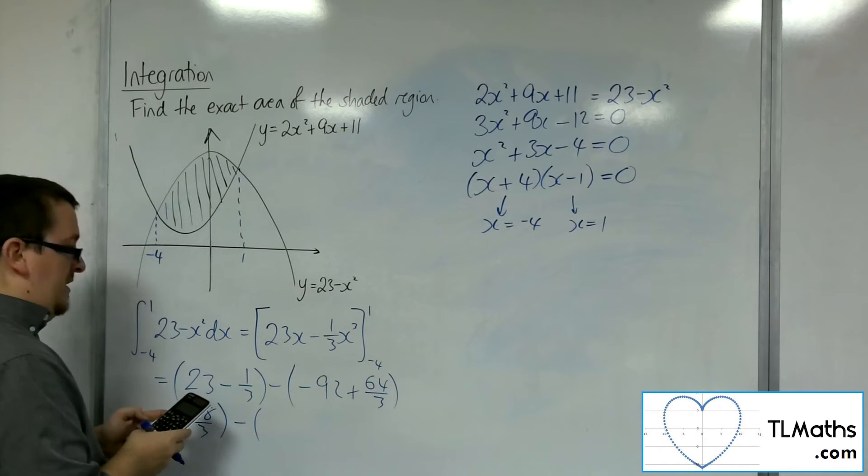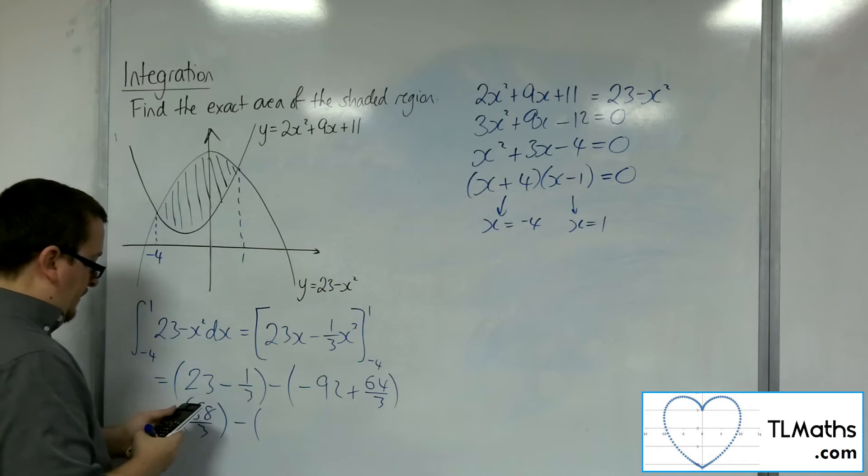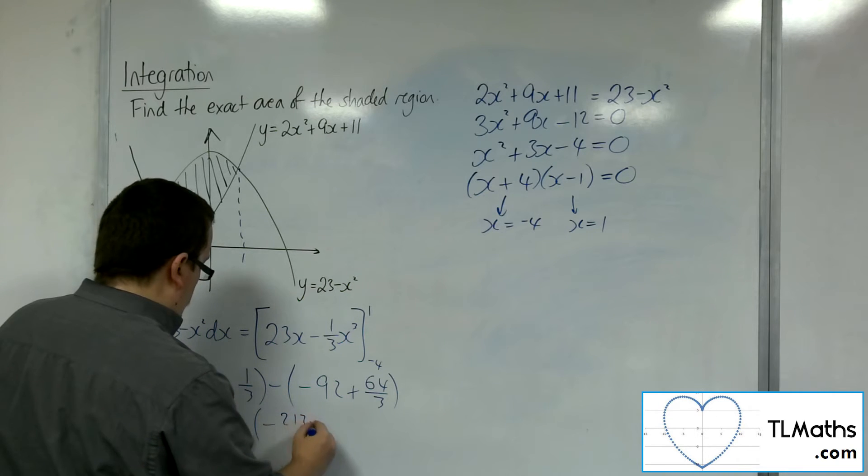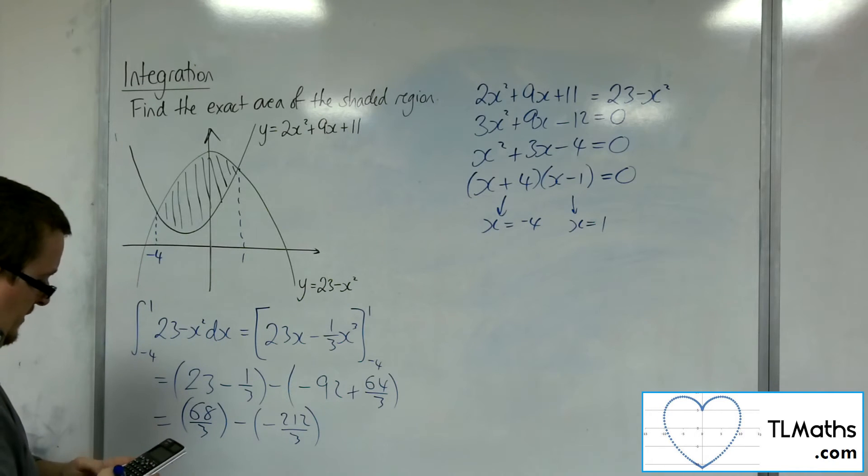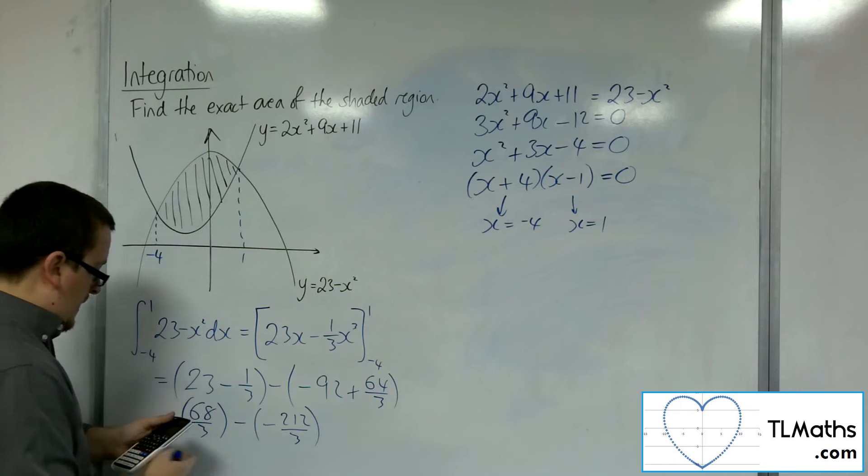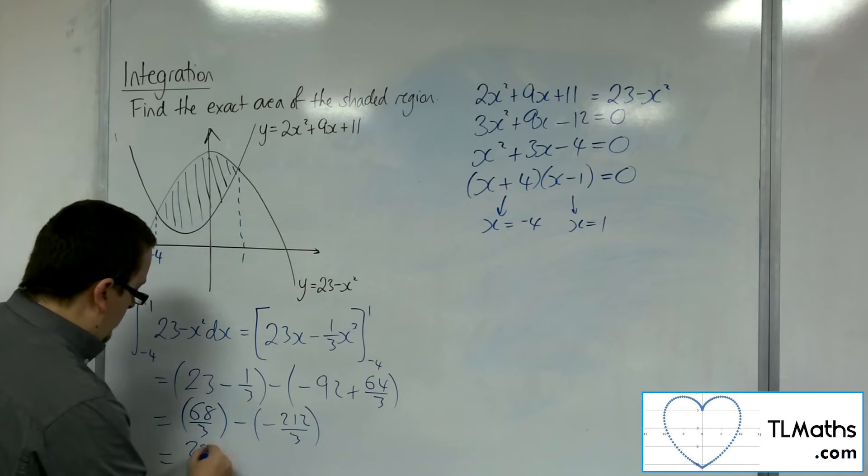Then we've got minus 92 plus 64 thirds, so minus 212 over 3. So 68 thirds plus 212 over 3 is 280 thirds.